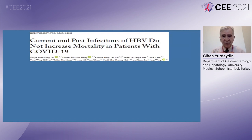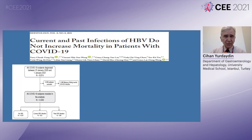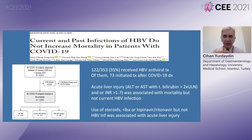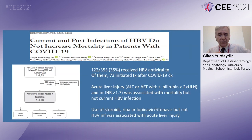The most important study on HBV and COVID-19 is in press in Hepatology. This is a study from Hong Kong where all COVID-19 patients diagnosed between January 2020 and January 2021 were assessed. Approximately 4,900 patients without HBV were compared with 253 patients with HBV, and 122 of 253 patients with HBV had received antiviral treatment. Of them, 73 initiated treatment after COVID-19 diagnosis. Acute liver injury was associated with mortality, but not current HBV infection. Use of steroids and other treatments were also associated with acute liver injury, but not HBV.